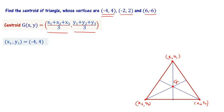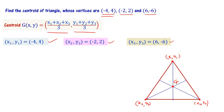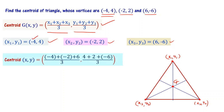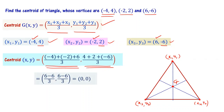Let x₁ comma y₁ equal (minus 4, 4), x₂ comma y₂ equal (minus 2, 2), and x₃ comma y₃ equal (6, minus 6). Substituting: centroid equals (minus 4 plus minus 2 plus 6) divided by 3 comma (4 plus 2 plus minus 6) divided by 3, which is 0/3 comma 0/3, so the centroid is (0, 0).